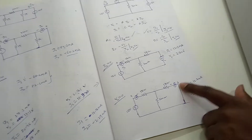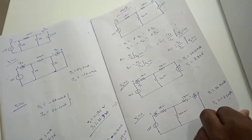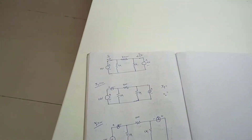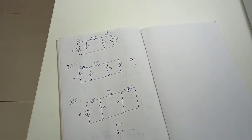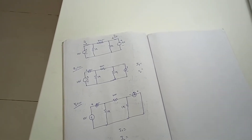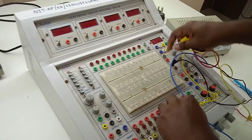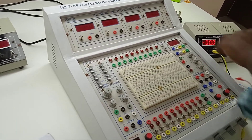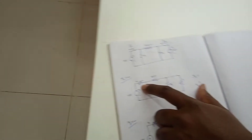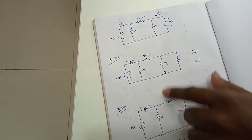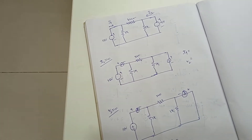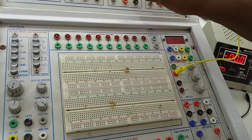From these two values you can calculate B and D. Now we move to the pi circuit. For the pi circuit with I2 equals 0, we connect one ammeter to measure I1 and one voltmeter to measure V2.